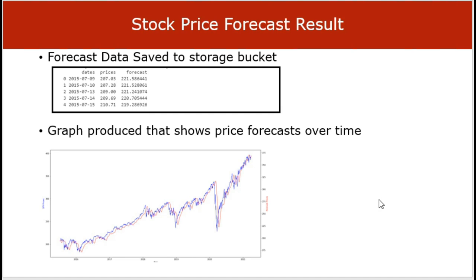A graph will also be produced showing the SPY prices for a period of five years. Those actual prices are shown in blue, and the prices predicted by the model for that time period will be shown in red. That concludes the stock price prediction model on the Google Cloud Platform using a neural network.